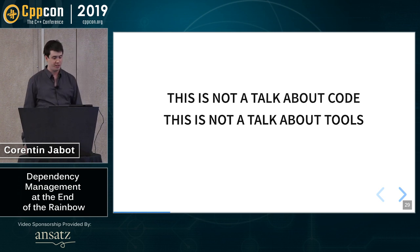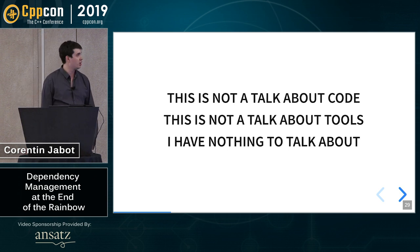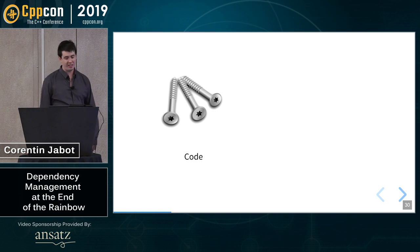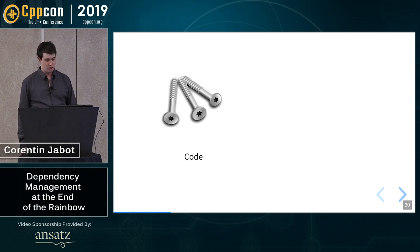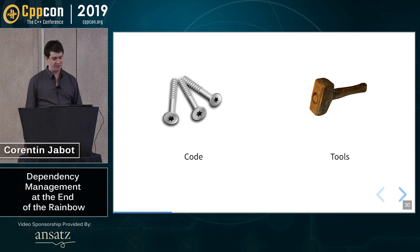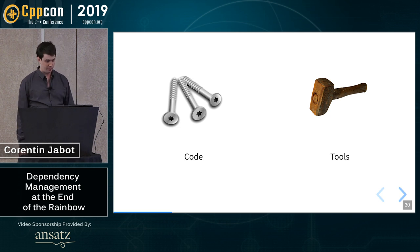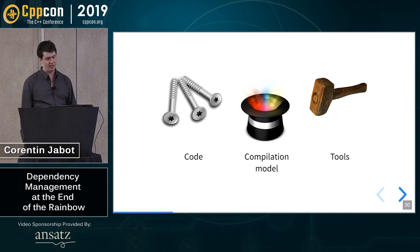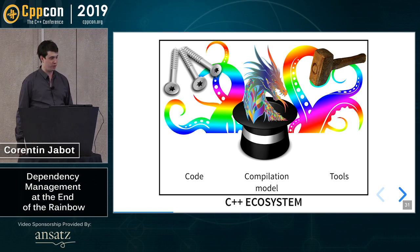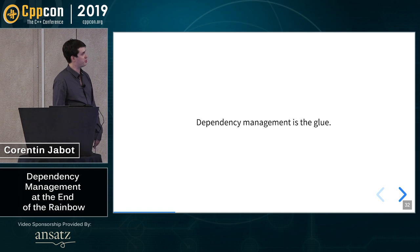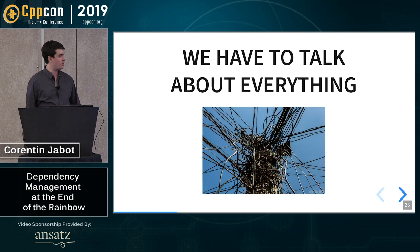So this is not a talk about code, not about tools — I have nothing to talk about! But we have code, and when you write code, the consensus is that tools don't exist, or tools are not free, or your users don't have tools, so you cannot assume that a tool exists. But of course we also have tools. And when you write tools, the assumption is that people will not modify their code, so you have to deal with 50-year-old code. Between code and tools, we have the compilation model of C++, which is how you transform your code into a program. All of that is the C++ ecosystem. I think dependency management is the glue that ties it all together.